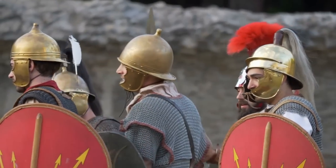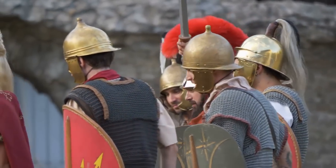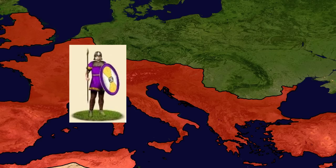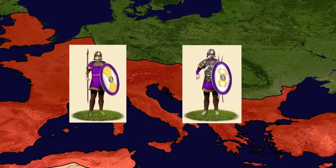The structure of the army also changed significantly. Previously, troops were stationed on the borders of the empire, but by the early 4th century the Roman army was divided into border guards called Limitanei and mobile field forces called Comitatenses. The border guards were still stationed on the frontiers, while the mobile field forces were located behind the borders and were tasked to deal with invaders who had penetrated the frontier.